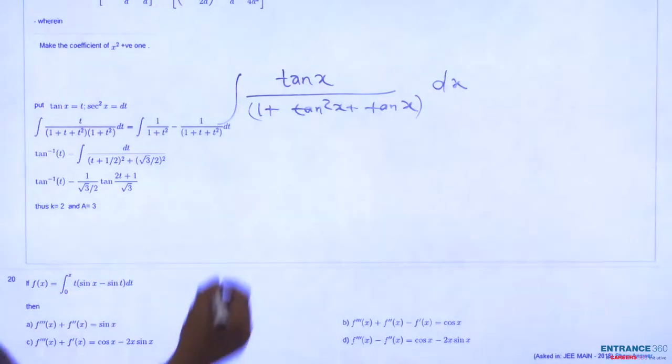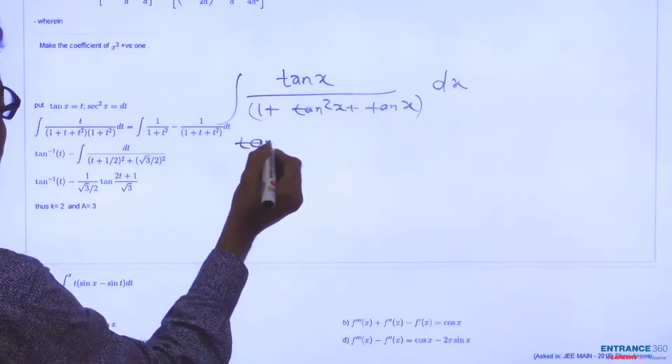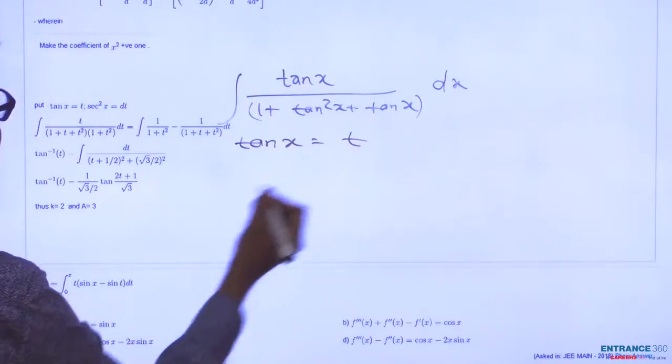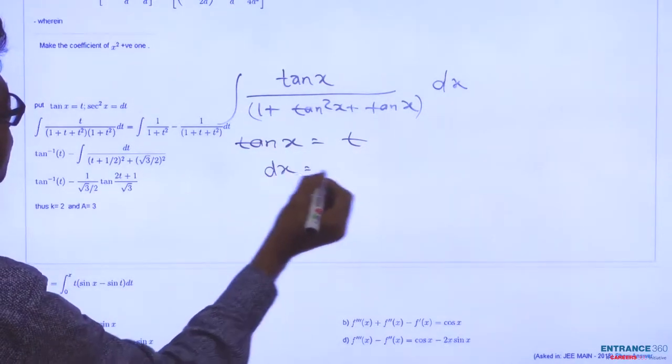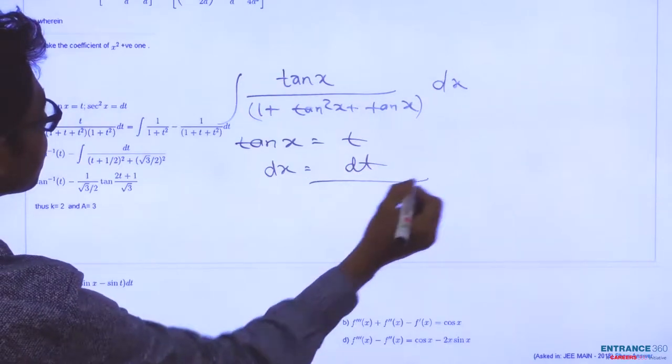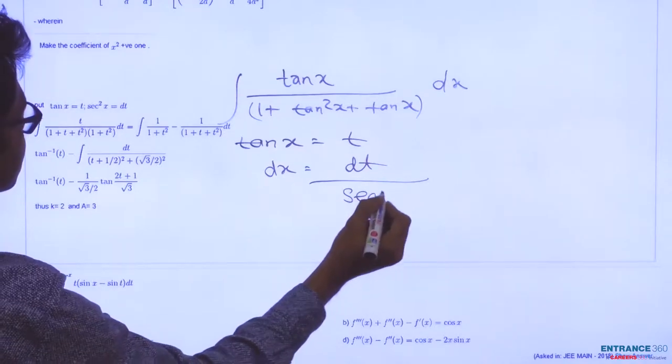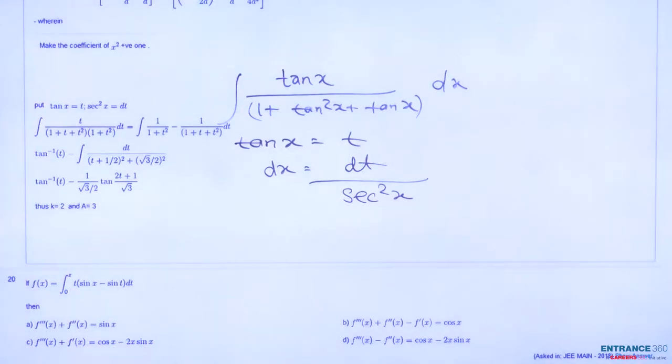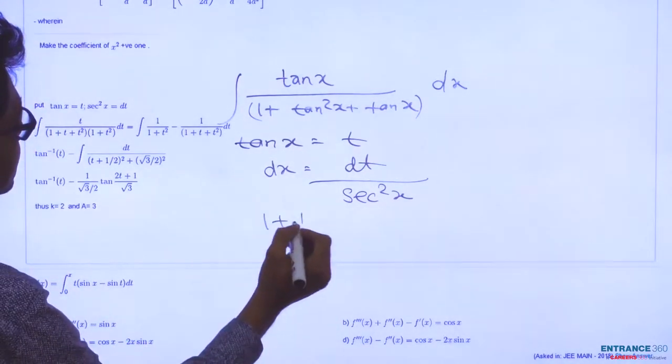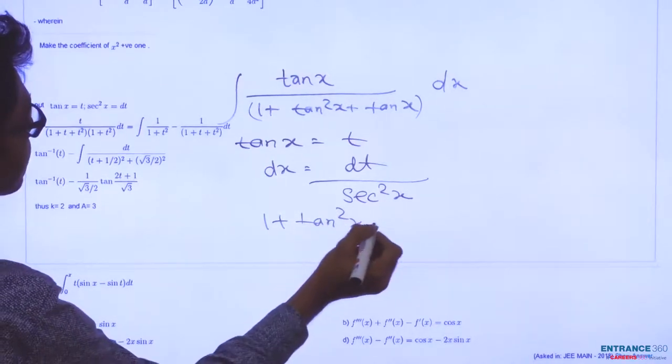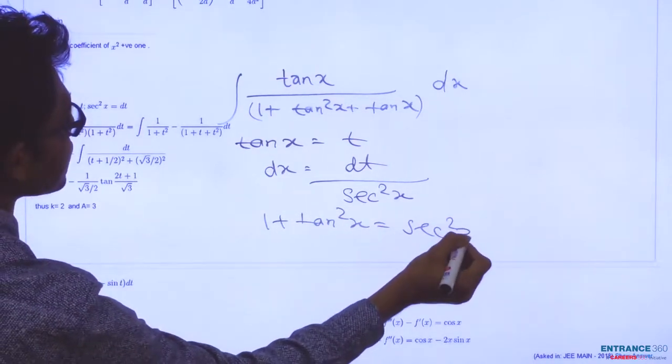Now substitute 10^x equal to t, then dx will be equal to dt divided by 10^x, which is dt divided by t, and 1 plus 10^(2x) equals 1 plus t squared.